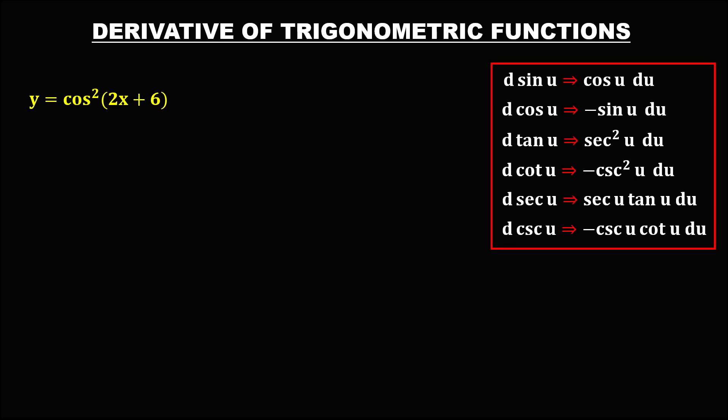For the next given, again using the general power formula, we first need to put the exponent outside. So y equals cosine(2x + 6) raised to a power.